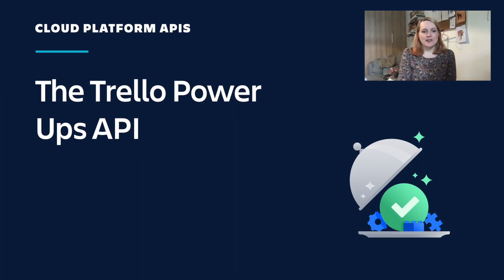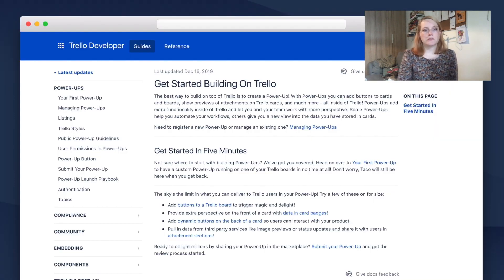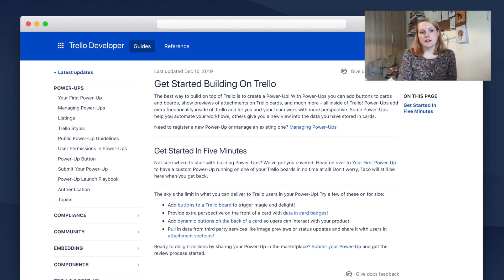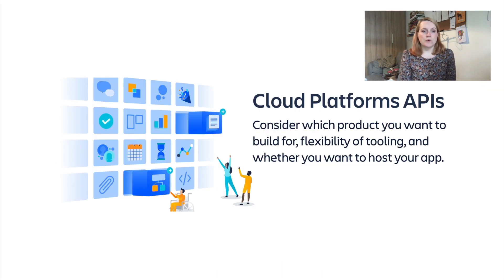Now let's take a look at Trello power-ups. Trello is a much more recent addition to the Atlassian suite of collaboration tools, and with that in mind, it may not surprise you that it has its own customisation platform. Power-ups are the best way to build on top of Trello — they allow you to customise the Trello experience by adding buttons to cards and boards, adding extra functionality such as preview images, or even automating workflow functions. Power-ups require that you host some code to provide HTML and JavaScript that Trello renders within an iframe. There are also REST APIs and a JavaScript client library to make it easier to interact with the APIs. Similar to Connect and Forge, the Trello platform provides an option to store and retrieve key-value pair data, which can be associated with objects like cards, boards, and even organisations.